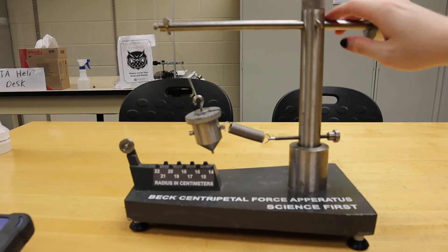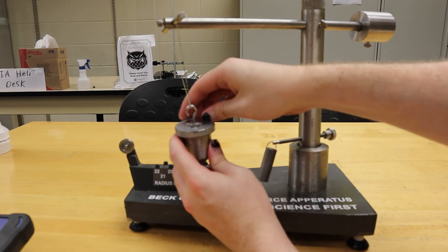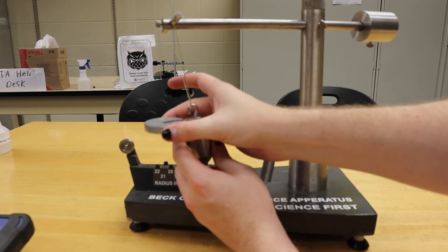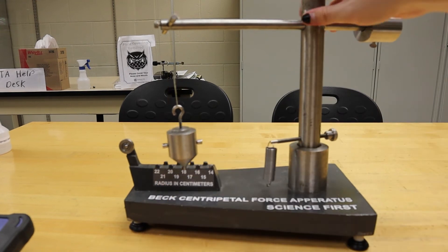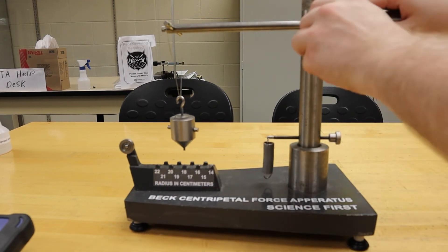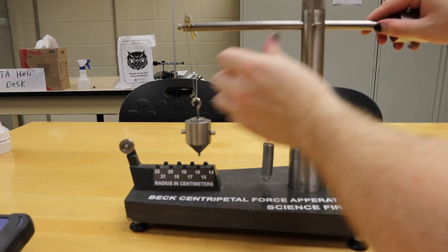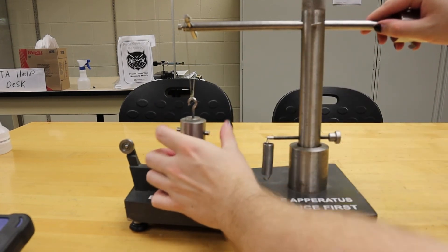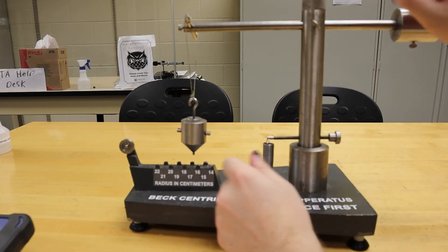Now we are ready to change the radius. To do this, we will unhook the spring and remove any added masses to the system. We will then loosen the set screw located on the vertical column of the apparatus, and then slide the metal post to a new radius that we will measure.